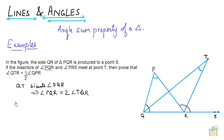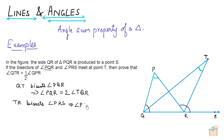We also know that TR bisects angle PRS. So TR bisects angle PRS, and this implies that angle PRS is equal to two times angle TRS. Since this particular angle equals this angle, angle PRS would be equal to two times angle TRS.